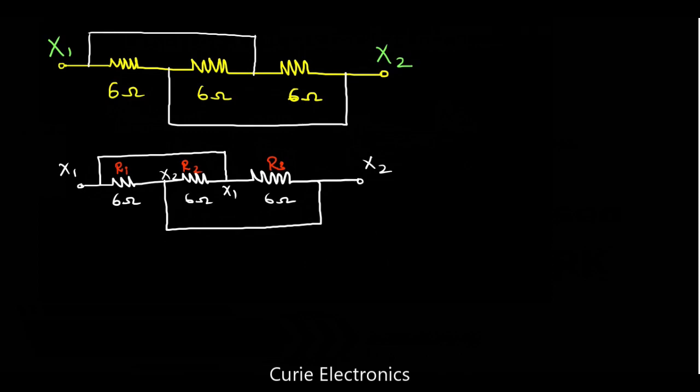That is R1. Now, let us take R1. R1 is connected between what and what? See, if you see here, R1 is connected between one end at X1 and the other end at X2. So, simply you have to draw it. This is the R1 and it is connected between X1 and X2.